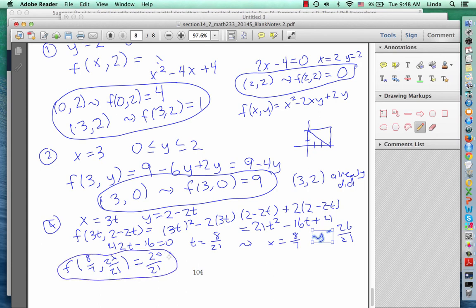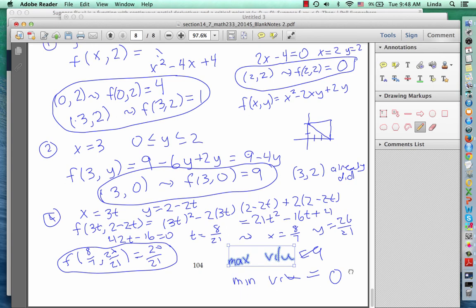So now we've got to look at the boundary points again for this line, but we've already considered both of those boundary points. So we don't have to consider them again. So I think we've got all the candidates for the maximum and minimum values. And just comparing those values, we can see that the maximum value is 9 and the minimum value is 0. Okay, that's the end of our video for section 14.7.